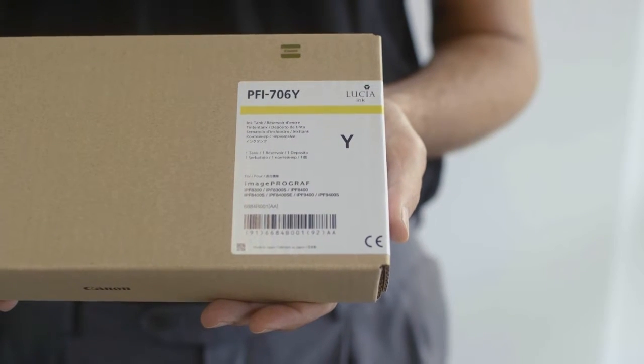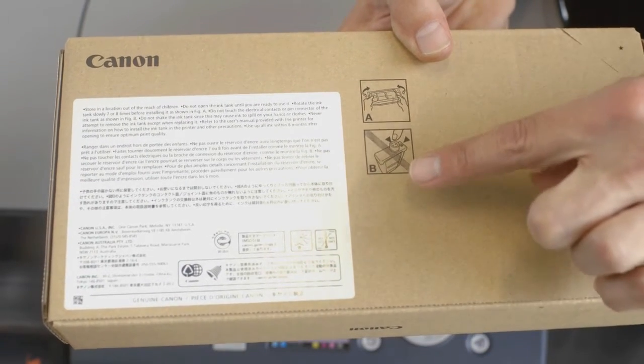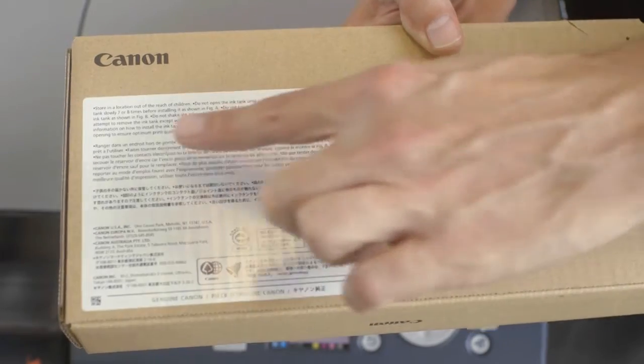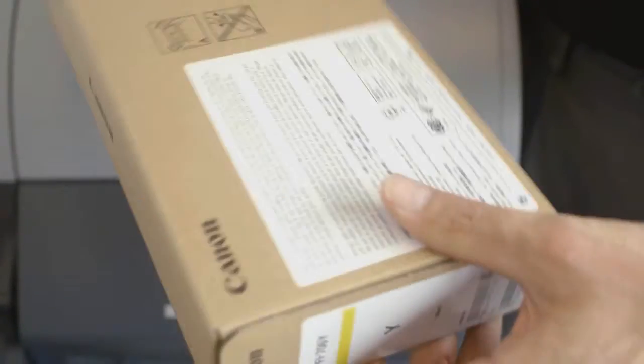We begin by preparing a new ink tank. Notice these instructions on the back of the packaging. While the new tank is still in its packaging, rotate it seven or eight times just like this.